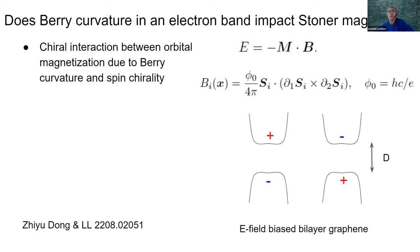There is a −mb interaction arising, where m is the orbital magnetization due to Berry curvature of the states filled by carriers in the band, and b is a magnetic field proportional to s·(∂s × ∂s) of spin-polarized electrons. It is non-zero if magnetization is twisting, and b is proportional to the chirality of that twisting texture.